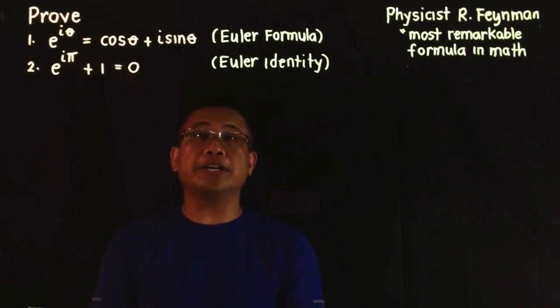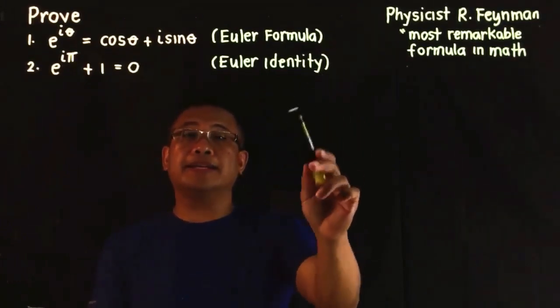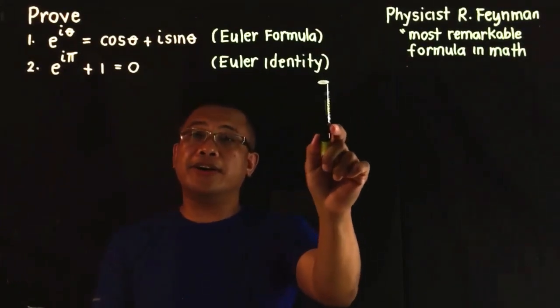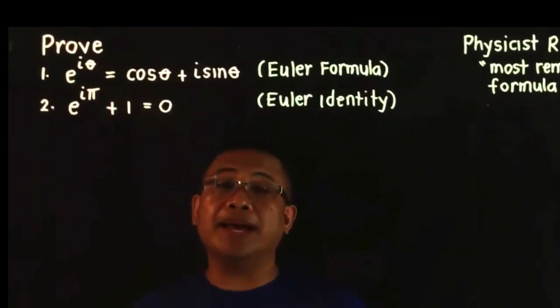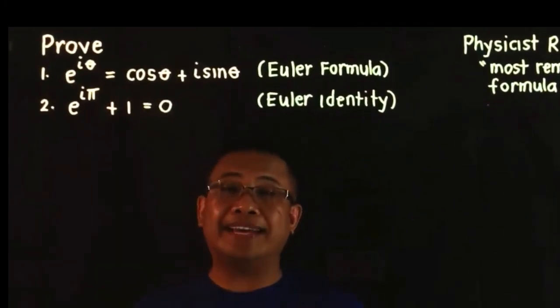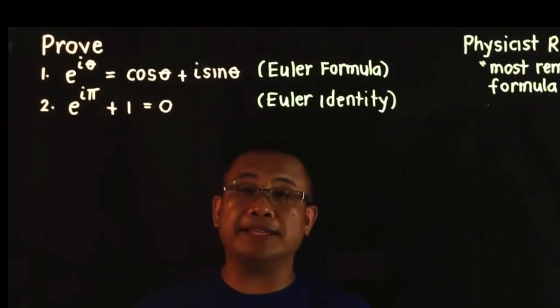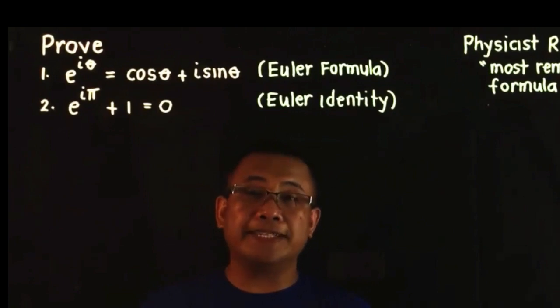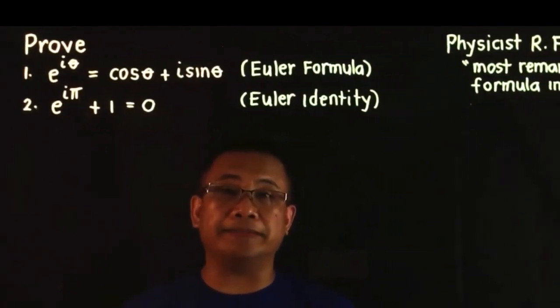In this lesson, we are going to talk about the Euler formula and the Euler identity. This Euler formula and this Euler identity are ubiquitous in mathematics, especially in physics and in electrical engineering.